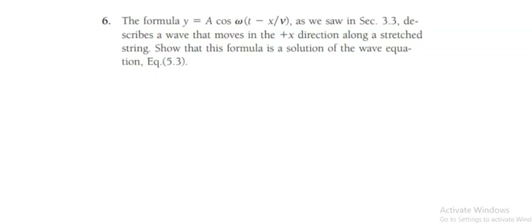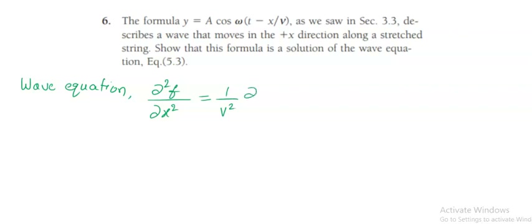We know that the wave equation is given by the second partial derivative — dou square f, that is the given function or formula, divided by dou x square — and that is equal to 1 by v square, again dou square f divided by dou t square. So we have to differentiate the given formula twice with respect to the coordinate x, and also with respect to t.